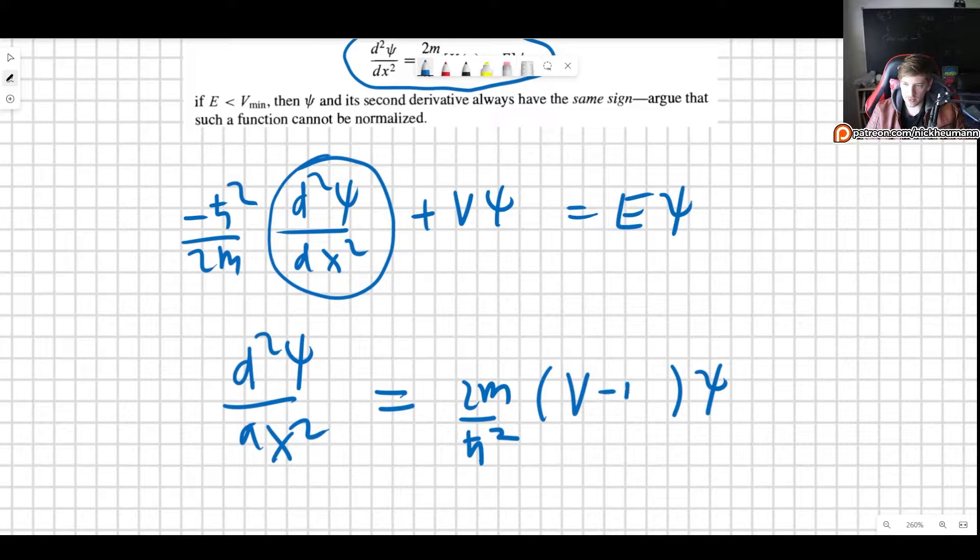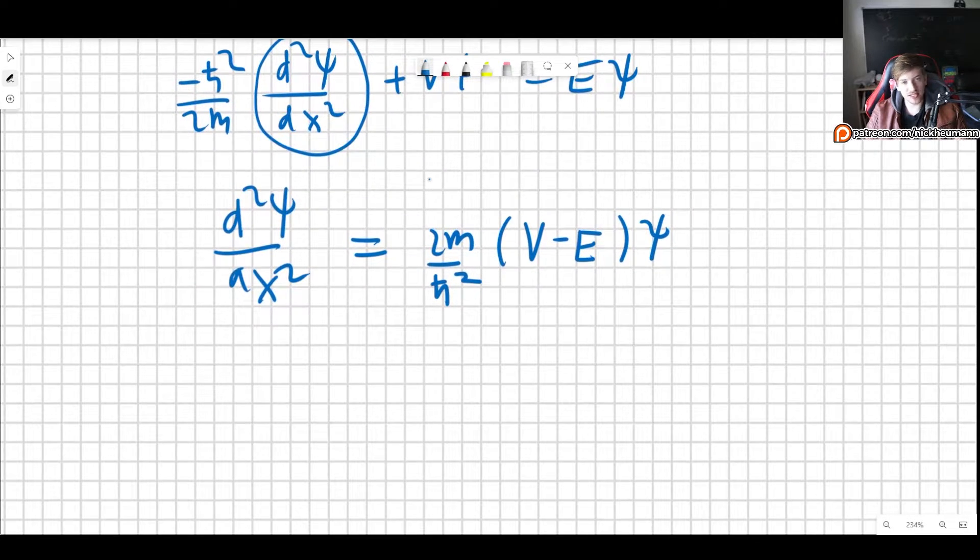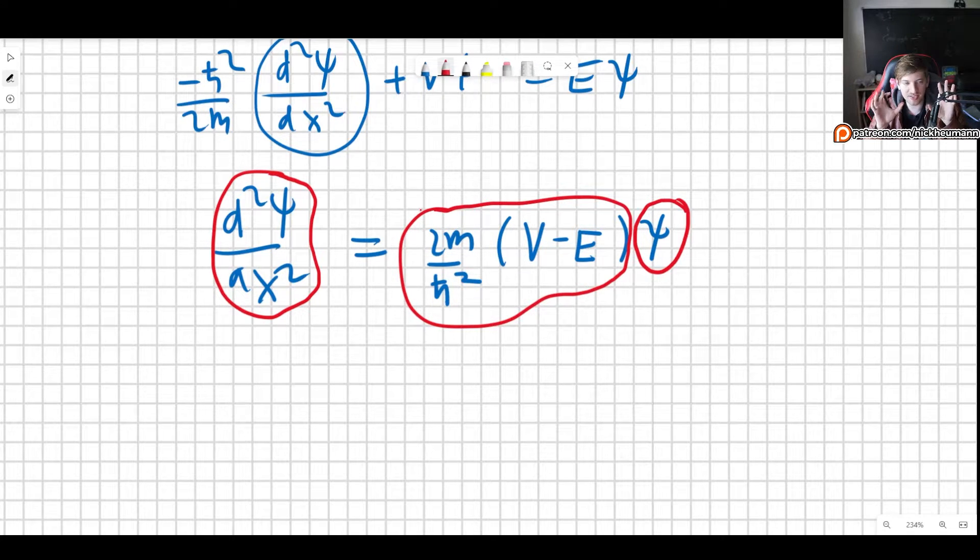Now why did we do this in this way? Because that way we can compare the behavior of the second derivative with respect to the wave function, because it is normalized by these quantities that will not be changing.